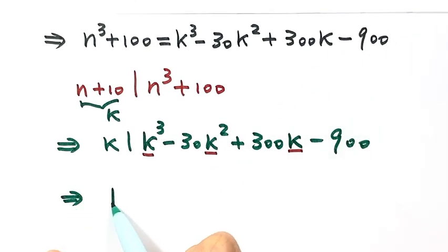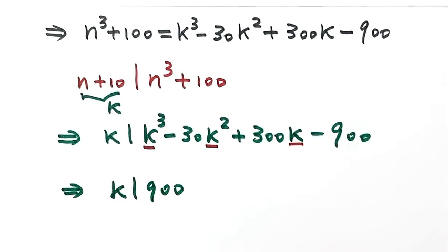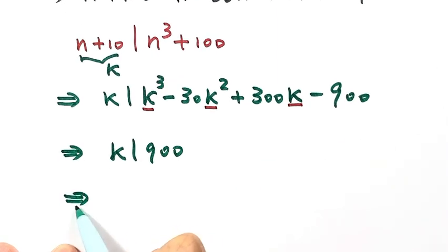So then we have the conclusion here. That's k divides 900. Then the maximum value of k is just 900.